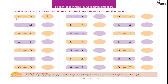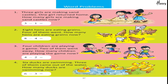Horizontal subtraction: subtract by drawing lines — one has been done for you. Word problems: three girls are making sand castles, one girl returned home — how many girls are making sand castles now? Eight hens are eating grains, four of them went — how many hens are eating grains now? Four children are playing a game, two of them went away — how many children are playing now? Six ducks are swimming, three of them came out of the water — how many ducks are swimming now?